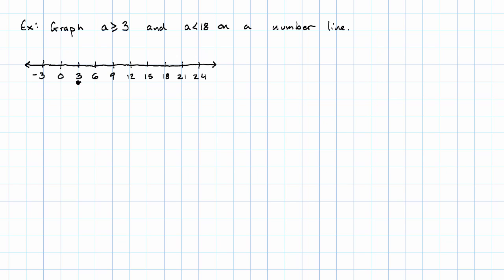So three and everything to the right. This is A is greater than or equal to three. Eighteen with an empty dot and everything to the left. That's A is less than 18.